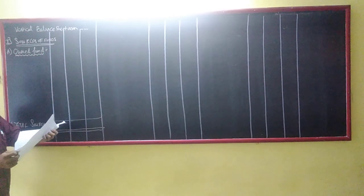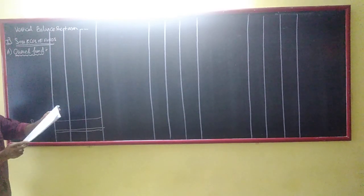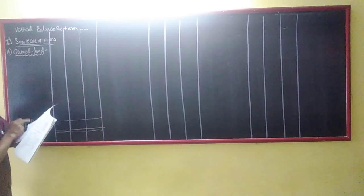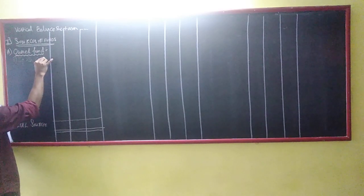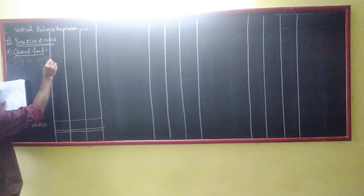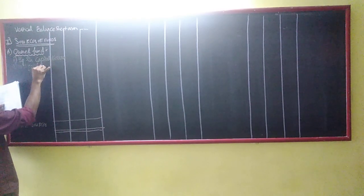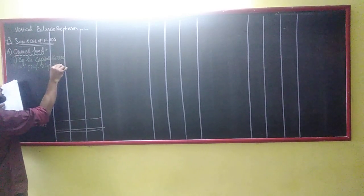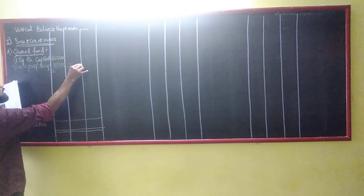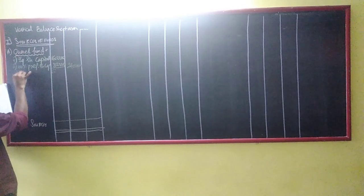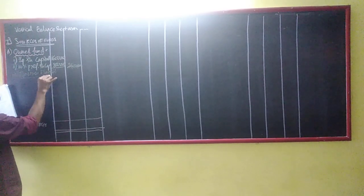What are the sources of funds? Own funds. Equity capital. The sources of funds — we have reserves and surplus, and we have reserves and surplus. So here we have the reserves and surplus heading.